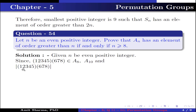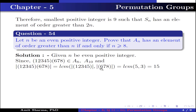The order of the permutation (1 2 3 4 5)(6 7 8) equals the lcm of the order of (1 2 3 4 5) and the order of (6 7 8), which is the lcm of 5 and 3, because (1 2 3 4 5) is a 5-cycle permutation and (6 7 8) is a 3-cycle permutation. The lcm of 5 and 3 is 15, which is greater than both 8 and 10.